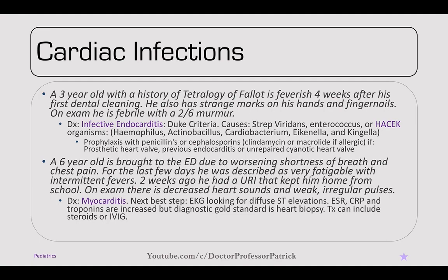A three-year-old with a history of tetralogy of Fallot is feverish four weeks after his first dental cleaning and has strange marks on his hands and fingernails. On exam, he's febrile with a 2-out-of-6 murmur — infective endocarditis. Evaluate using Duke's criteria. Most common causes are Strep viridans and Enterococcus, or the HACEK organisms: Haemophilus, Actinobacillus, Cardiobacterium, Eikenella, and Kingella. Prophylax with penicillins or cephalosporins — clindamycin or macrolide if allergic. Patients with a prosthetic heart valve, previous endocarditis, or unrepaired cyanotic heart lesion need prophylaxis before any dental procedure.